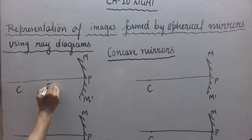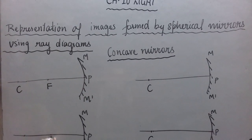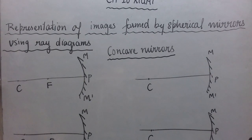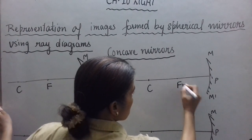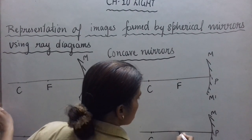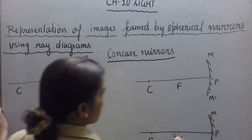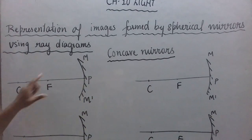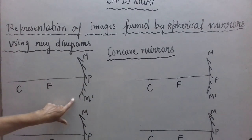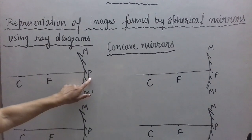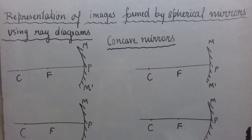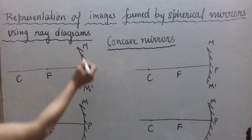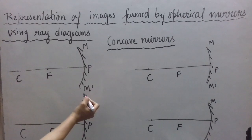For such concave mirrors, the focus F lies midway between C and P. So our principal focus will lie here. I have drawn the diagram for the concave mirror where the focus lies midway between C and P on the principal axis for mirrors having small apertures. P is the pole, C is the center of curvature, F is the principal focus, and MM' is the aperture.